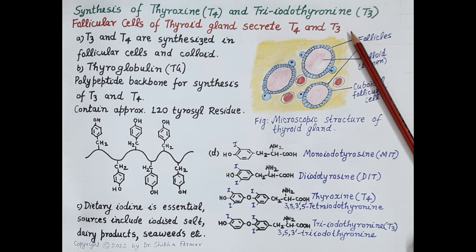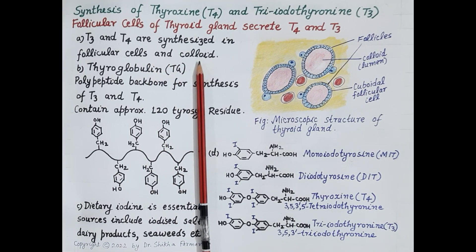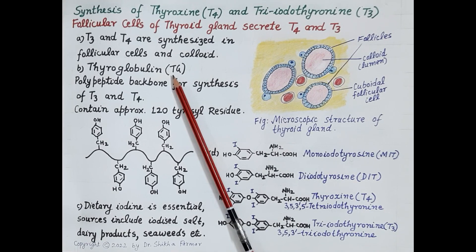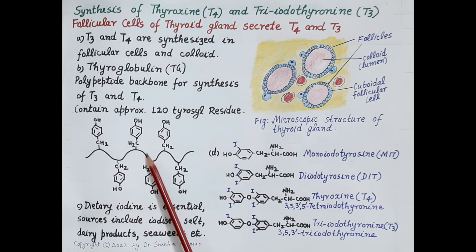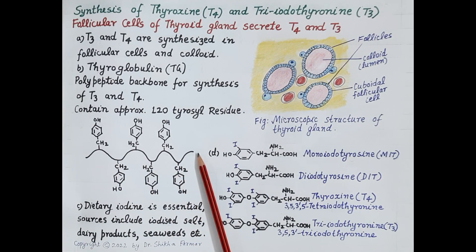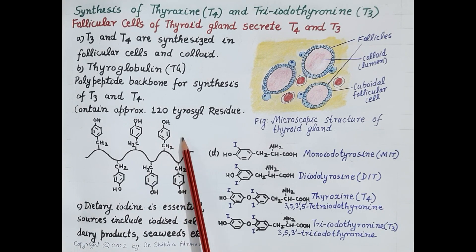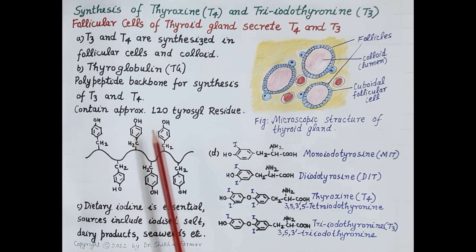Before going into the details of T3 and T4 synthesis, let's quickly review some important requirements and structures. T3 and T4 are synthesized in follicular cells and in the colloid in the follicular lumen. Thyroglobulin (TG) is a glycoprotein synthesized by the thyroid follicles. As a large protein, it provides a polypeptide backbone for the synthesis of T3 and T4, containing approximately 120 tyrosyl residues on which T3 and T4 are synthesized.